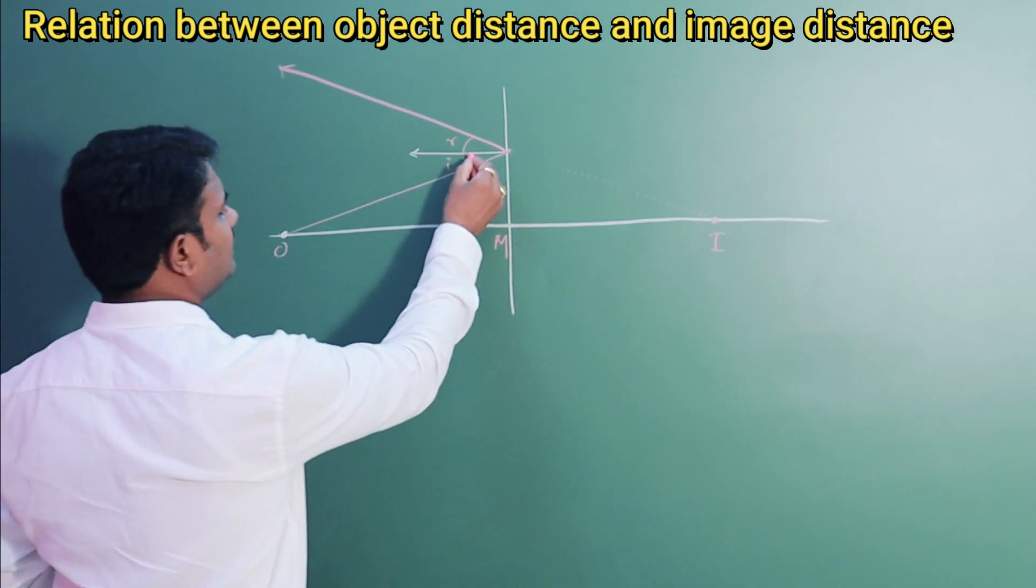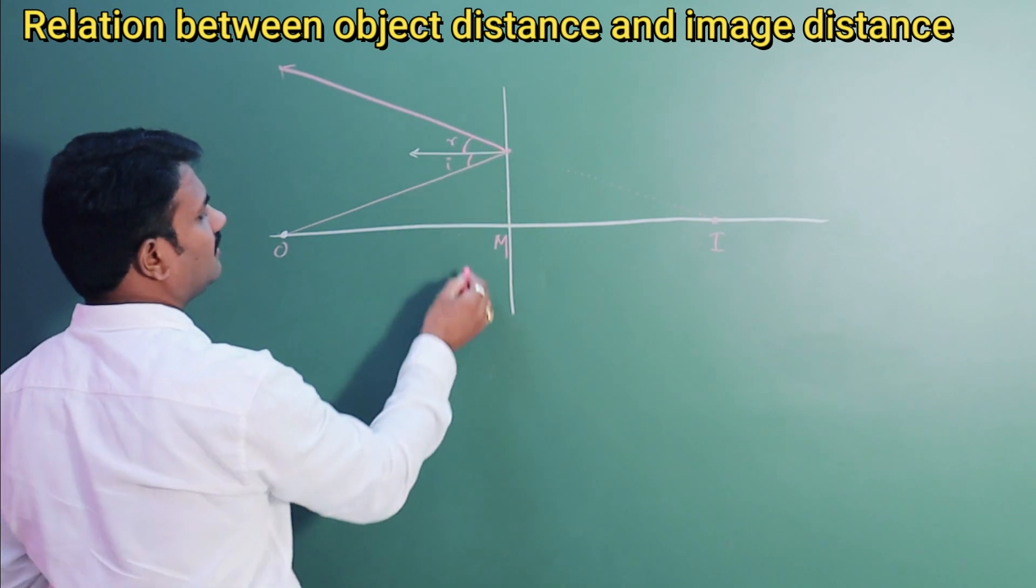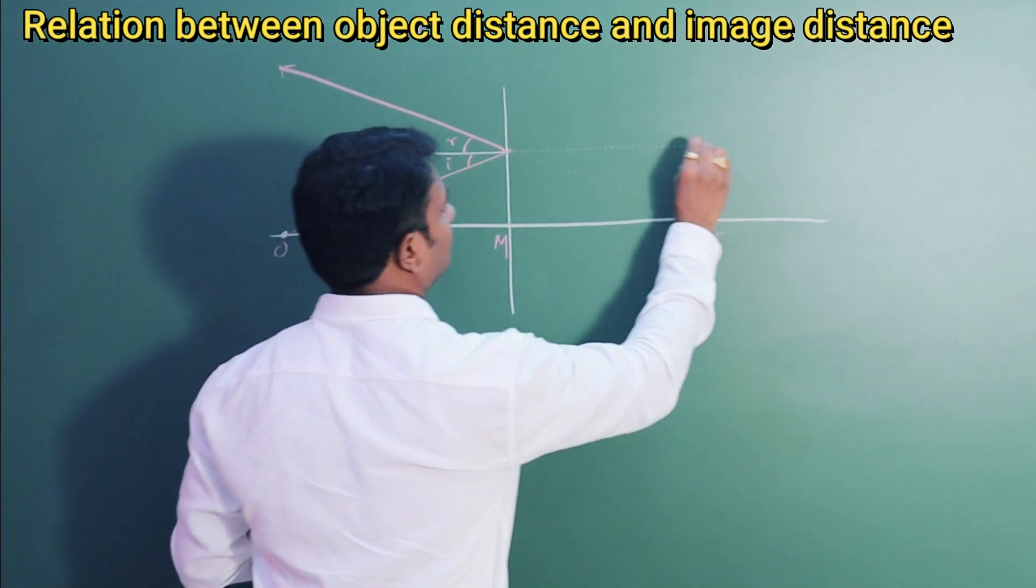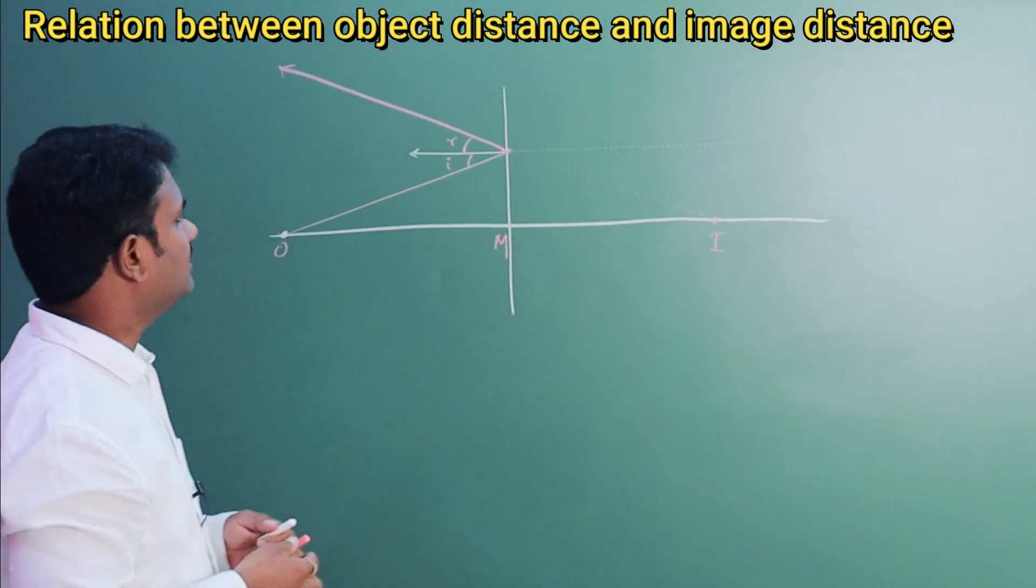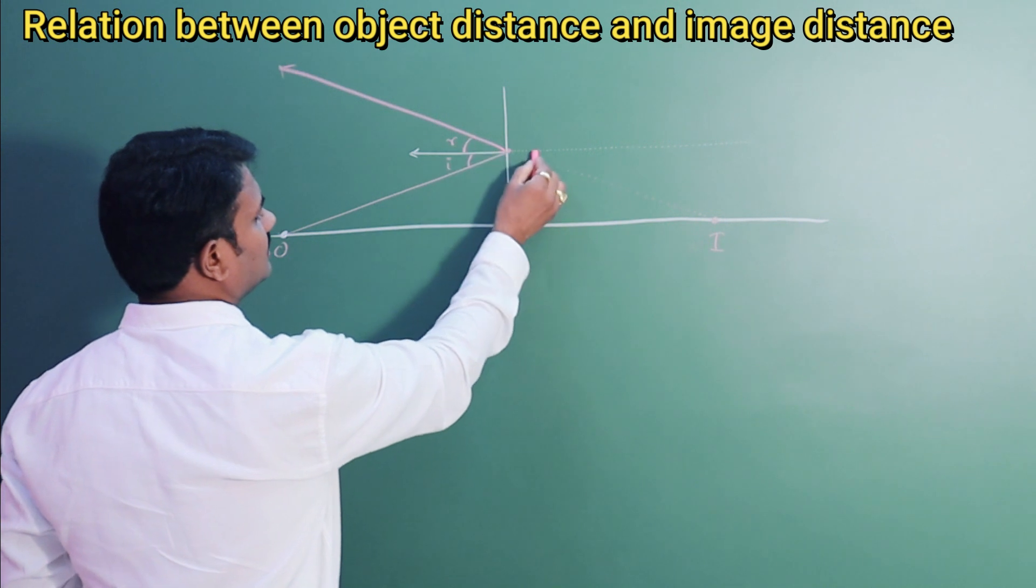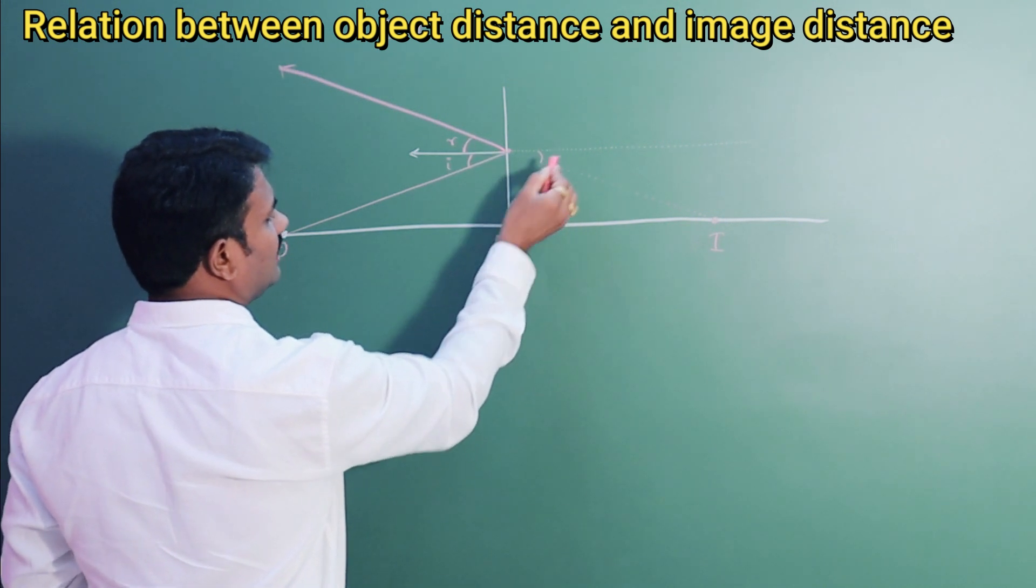Now, if this is I and this is R, if I extend this line, let us see what happens. These two are like parallel lines. This is like alternate angle. This is our R.